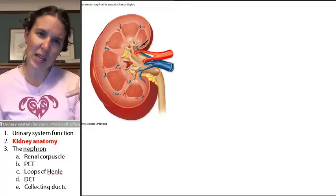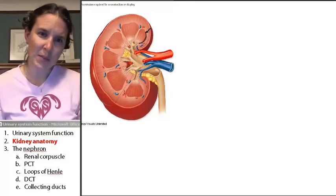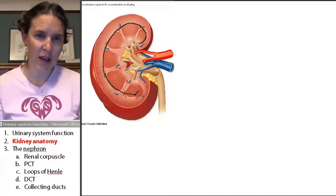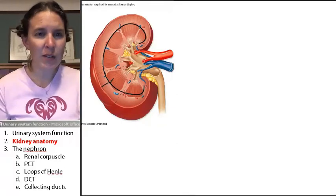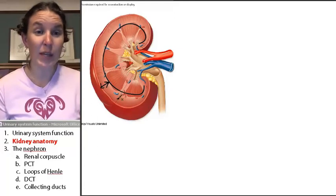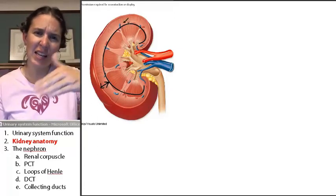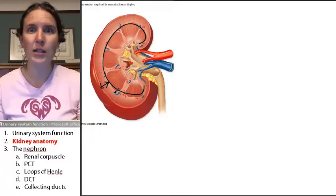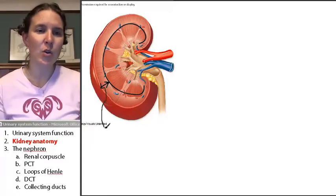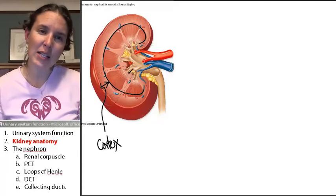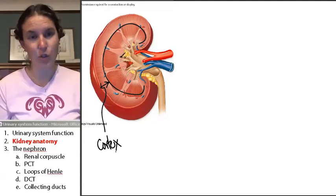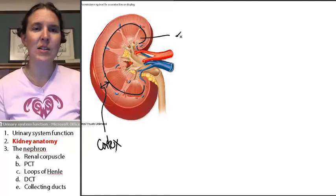Can you see how the kidney has two layers? If I draw a line here, I'm separating the kidney into two pieces. This part of the kidney — the outer layer, like a crust, a kidney crust — is actually called the cortex. And then this inner part that contains these little triangles or pyramids is called the medulla.